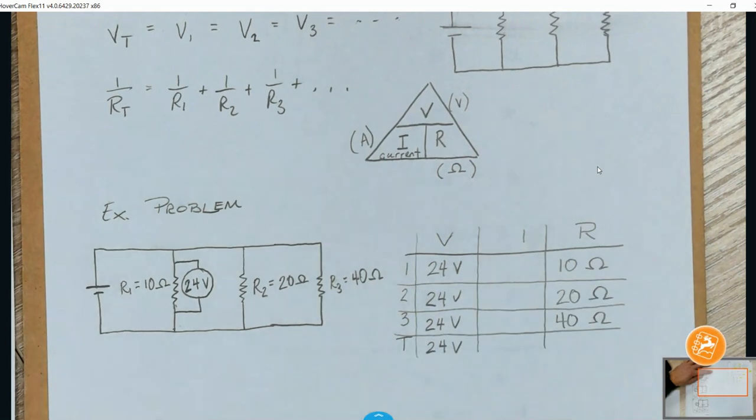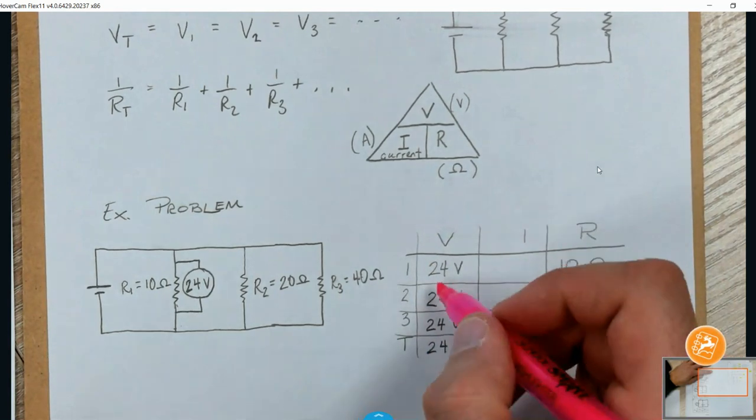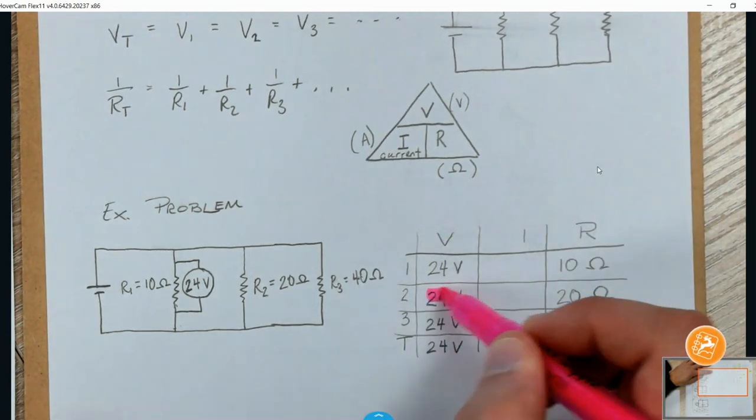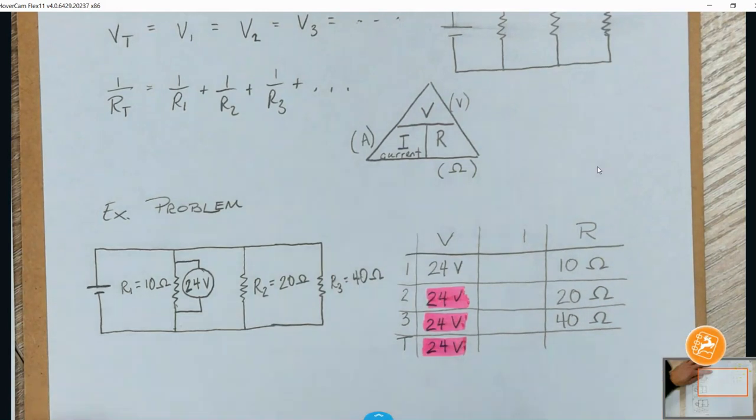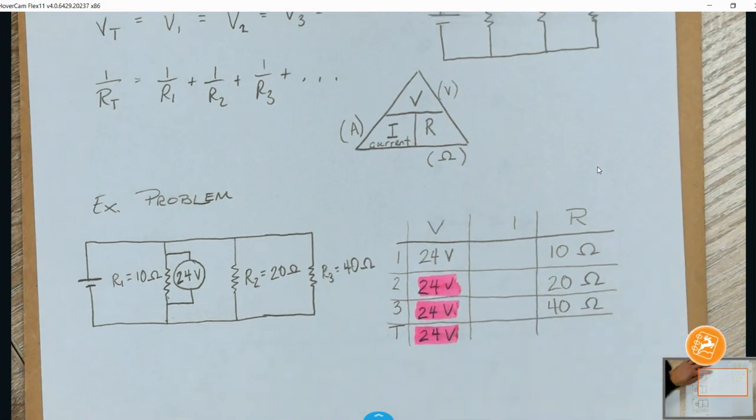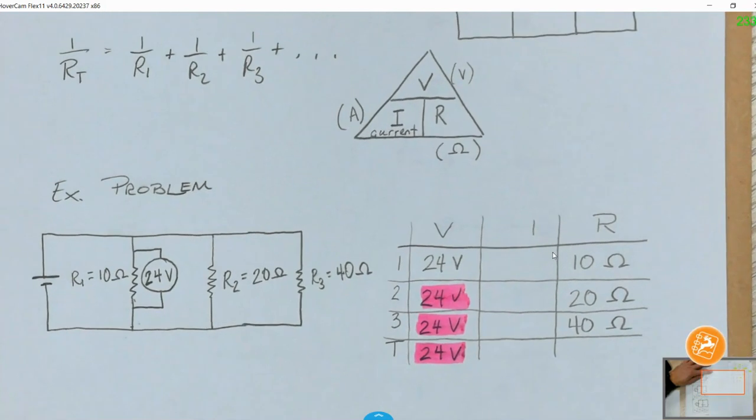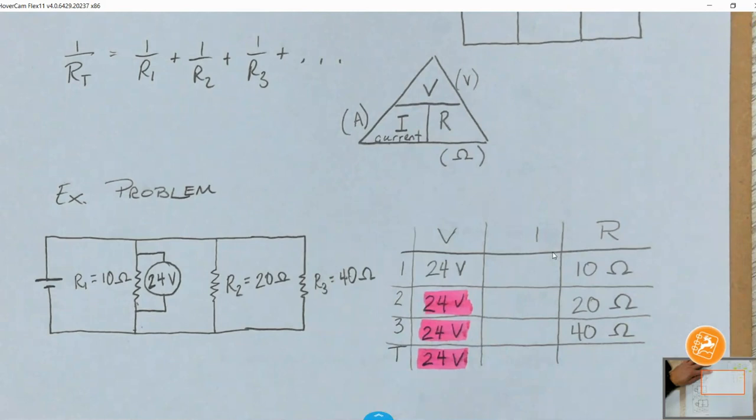Now I'm going to highlight that in pink because that is just basically, that came from the rules. Okay. If it came from the rules, I'm going to highlight it pink. If you had to do math for it, I'm going to highlight it in yellow. Alright. So, dope. Guys, once you have two of the three in any single row, now we can use Ohm's Law Triangle.